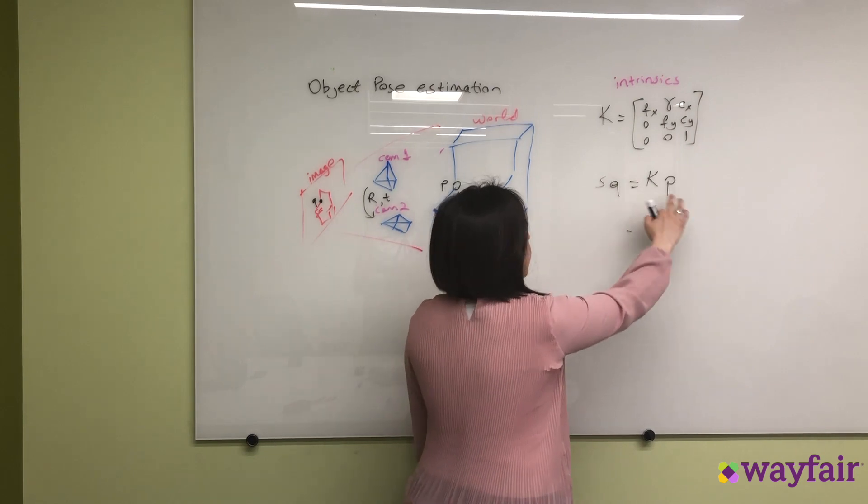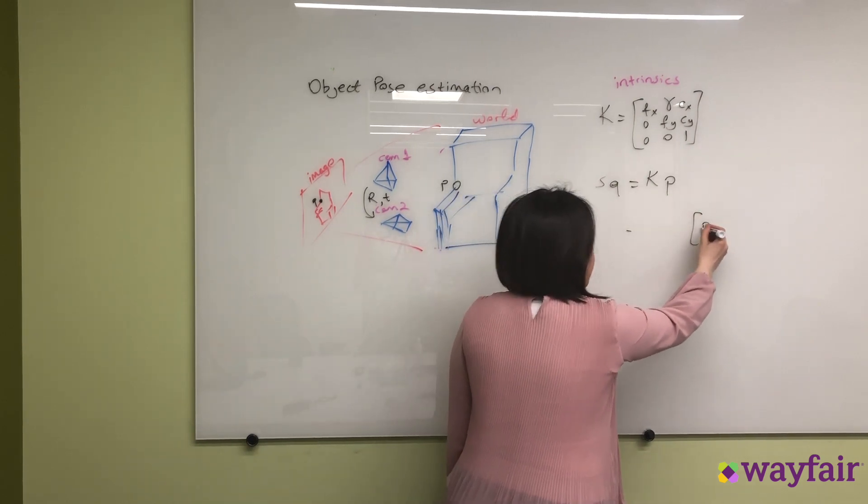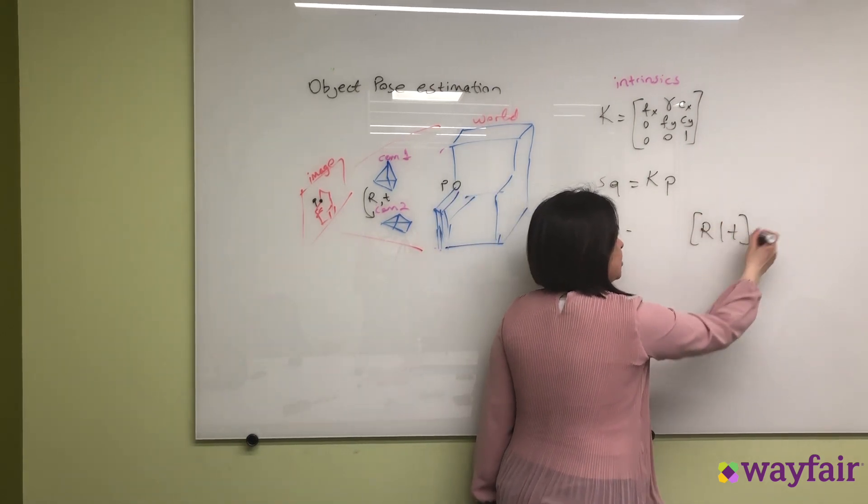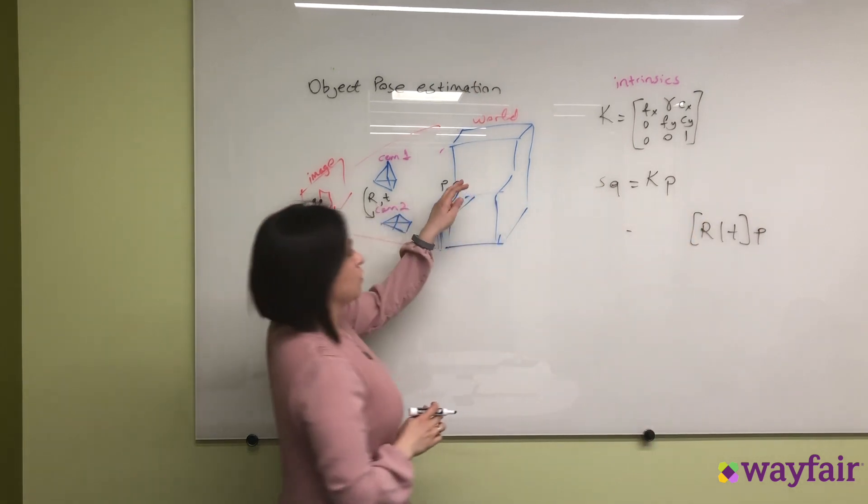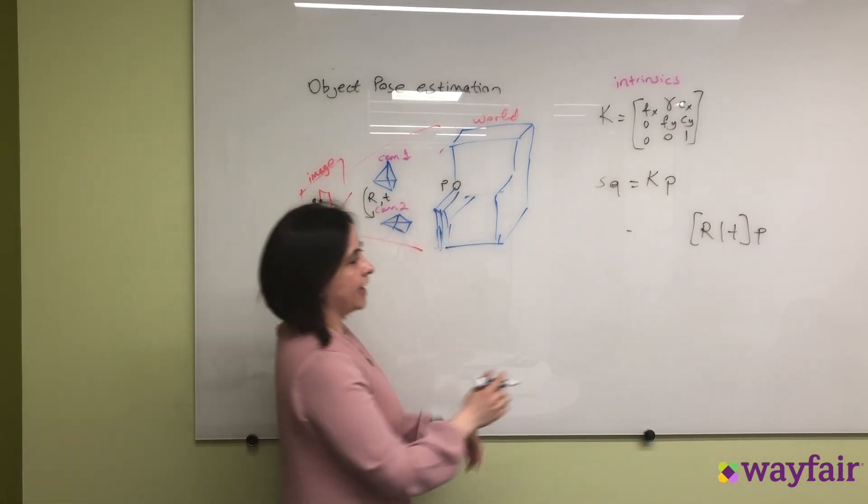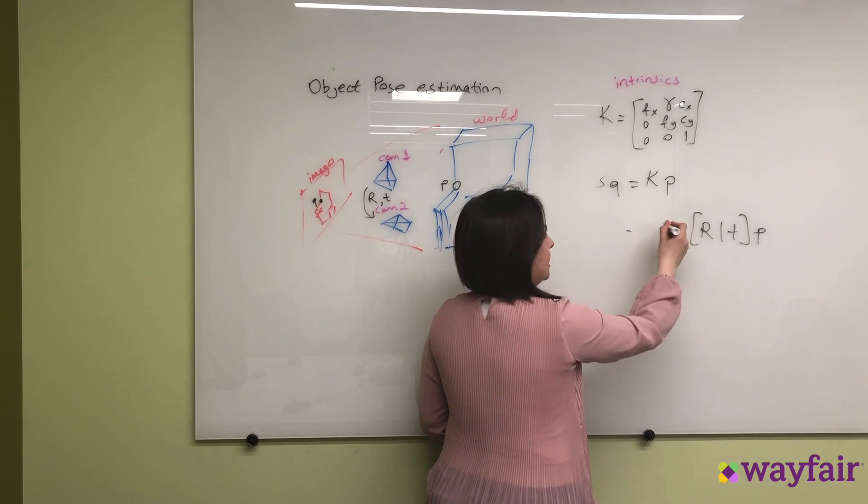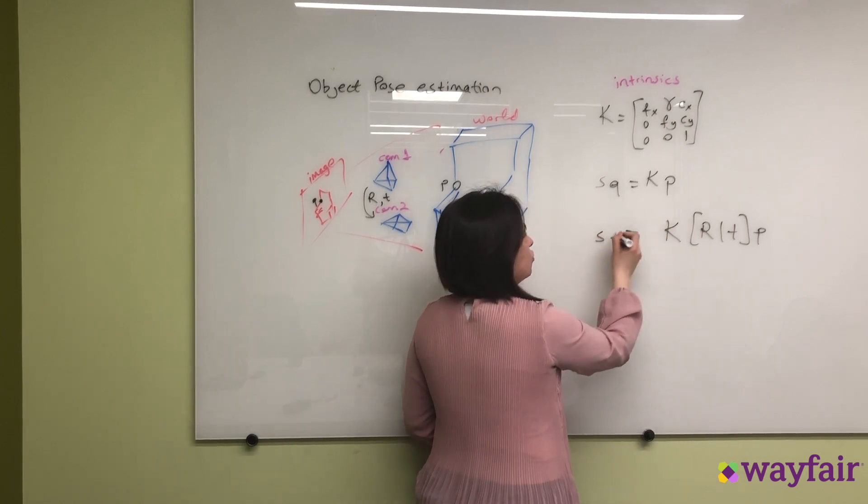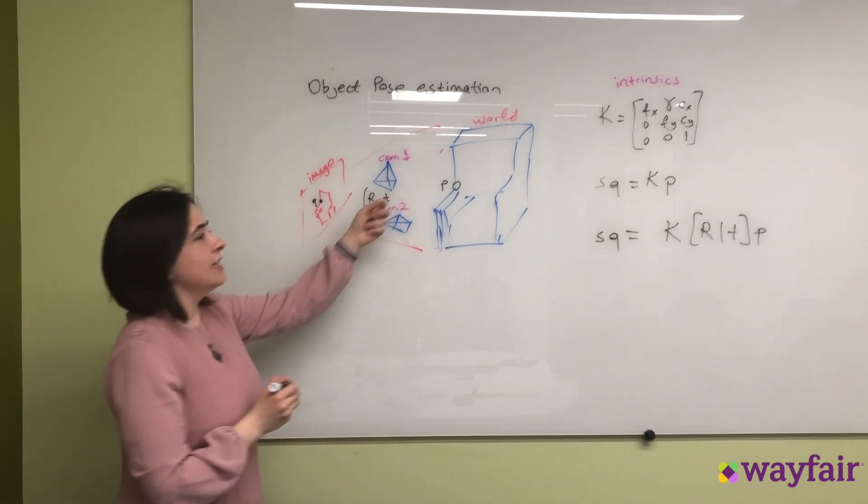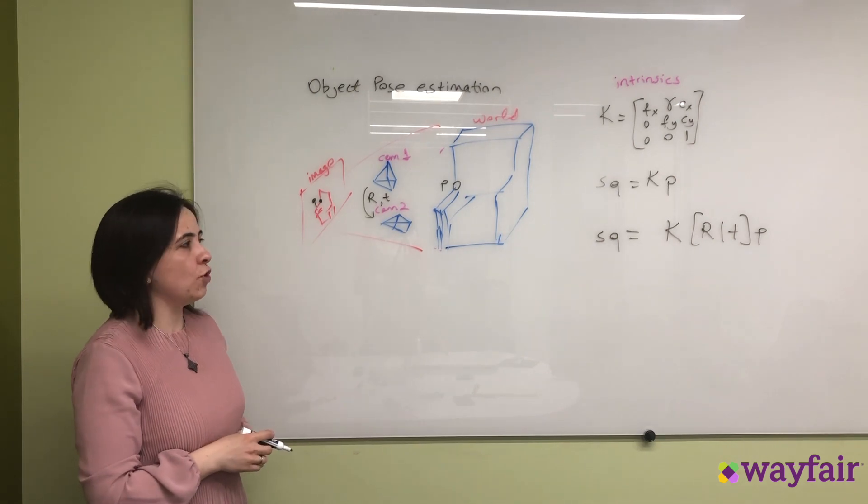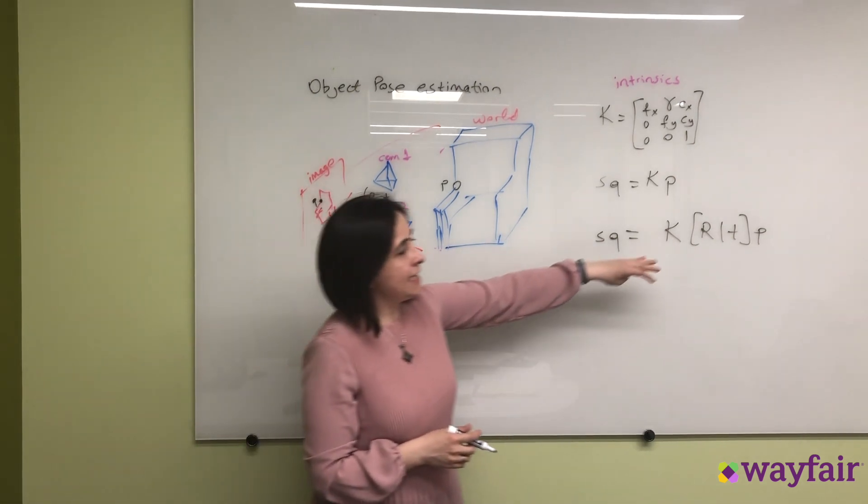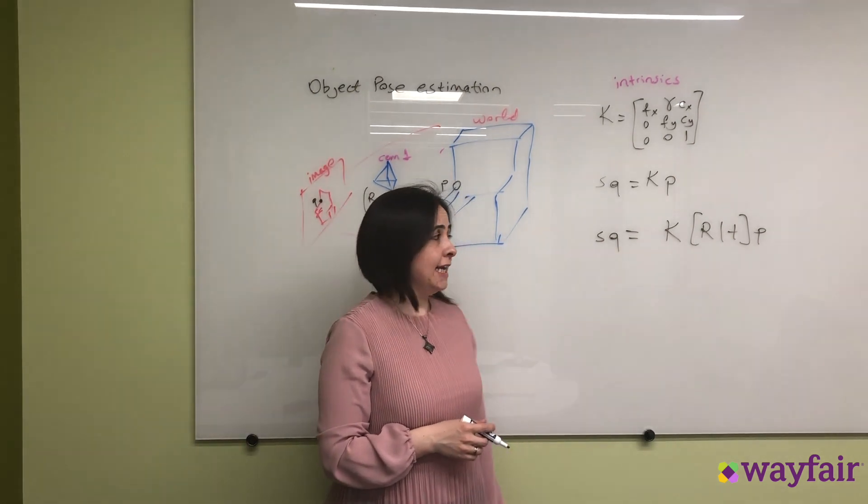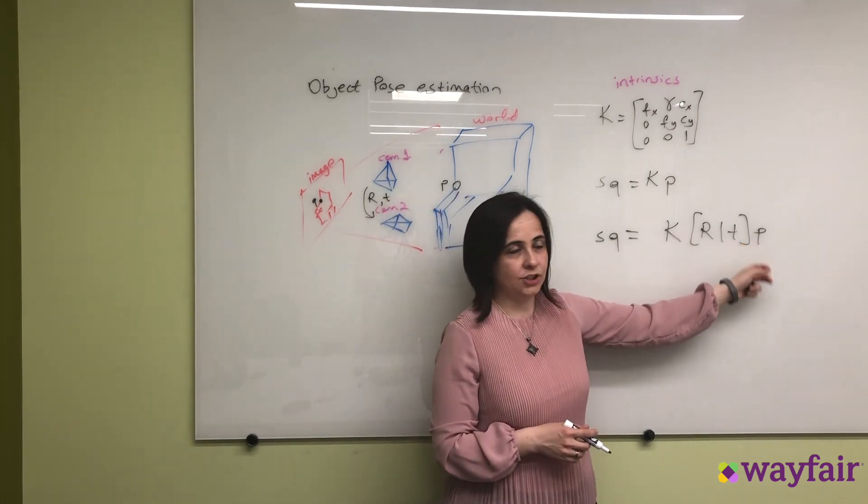What would happen is first we have to apply this rotation and translation to the real world 3D coordinate, and then use the camera intrinsic matrix again to do the projection into the second image pixel coordinate system. In this equation, what we are interested in is finding the rotation and translation.